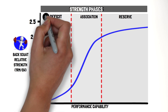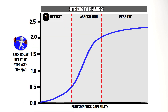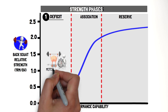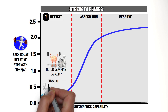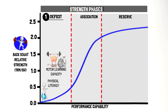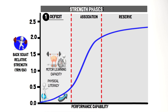Starting off with the strength deficit phase, this may be the shortest phase, based on the motor learning capacity of the individual. Novice athletes within this phase are often going through stages of physical literacy, especially if they have not been previously exposed to strength training. Here, although an individual's strength is improving, they may not be able to exploit their levels of strength and translate them into positive sport performance benefits. This phase will ultimately continue until the individual becomes competent with the strength training exercise.